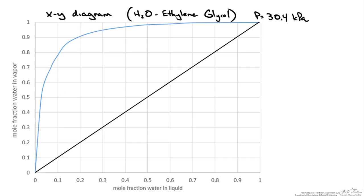We have a water–ethylene glycol mixture to be separated, operating at a pressure of 30.4 kilopascals. This is our equilibrium data plotted on an xy diagram. Given a feed of z = 0.5 (50% water) and vaporizing 40% of the feed using our flash conditions, we want to find the compositions of the vapor and liquid streams leaving.